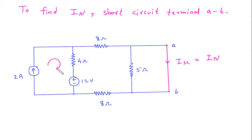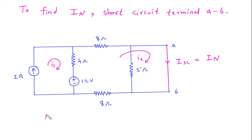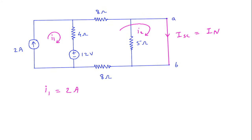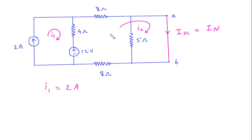So let's say this is loop number 1 with current I1 and this is loop number 2 with current I2. Before applying KVL, we can see that I1 is equal to 2 Ampere. Now we will apply KVL to loop number 2.